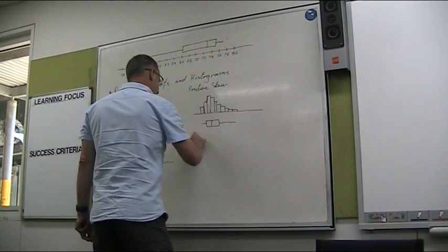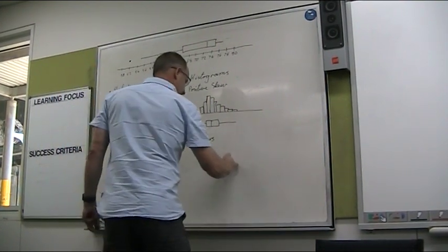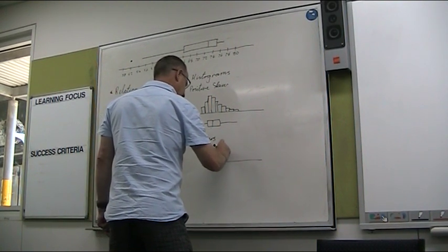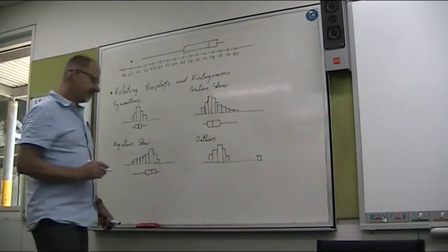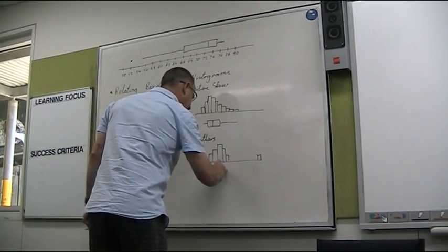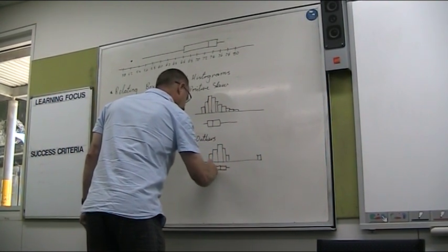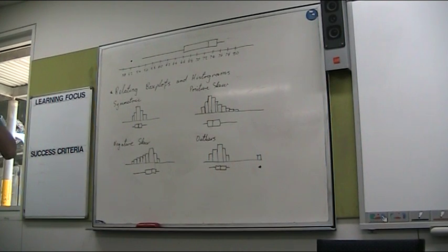And outliers. And for a histogram, something like this. And for a box plot, something like this. Alright. Alright. That's it, thank you.